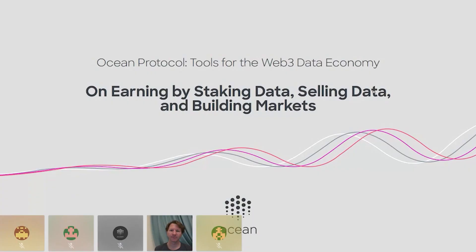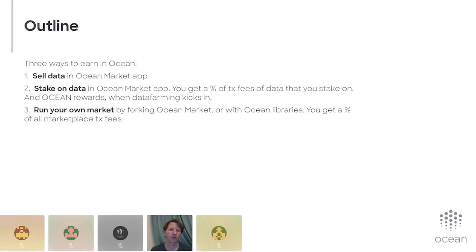Here I'm going to talk about three ways that people can earn in Ocean: by staking data, selling data, and building marketplaces. Selling data is basically the most straightforward way — selling data using the Ocean Market app, as Matthias just demoed.